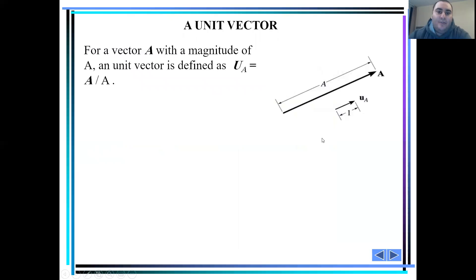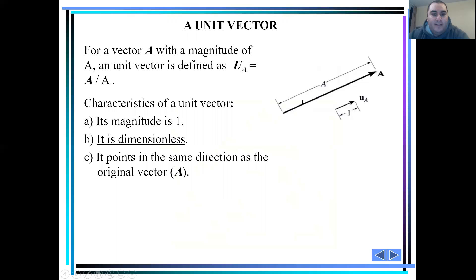First of all, let's introduce a unit vector. For a vector A with a magnitude of A, the unit vector is defined as u_A equals A vector divided by A. The characteristics of a unit vector is that its magnitude is 1, is dimensionless, and it points in the same direction as the original vector A.